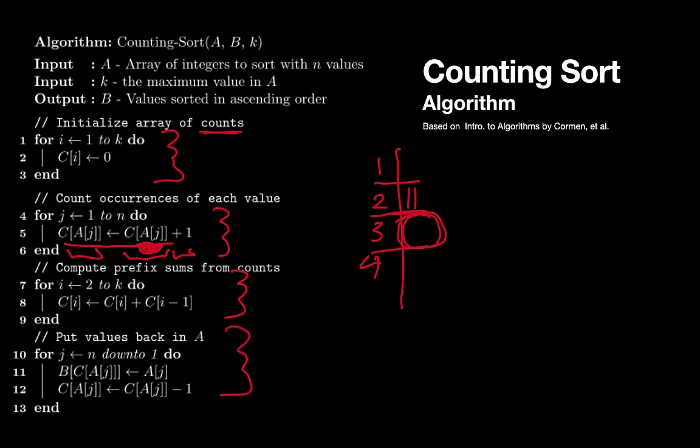Okay the fourth phase then uses that updated table to figure out where to put things back in our B array and as it's placing things in the B array it also is updating this tally table and decreasing the values that are stored in it.